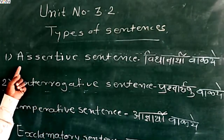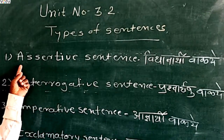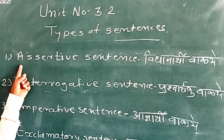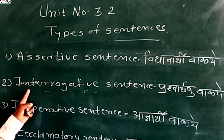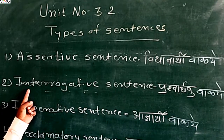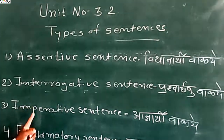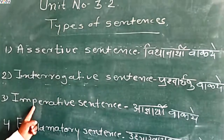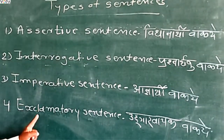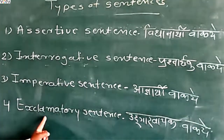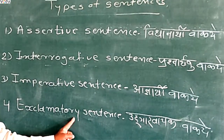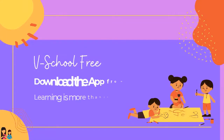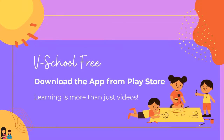The four kinds are: one, Assertive Sentence; two, Interrogative Sentence; three, Imperative Sentence; and four, Exclamatory Sentence. Thank you.